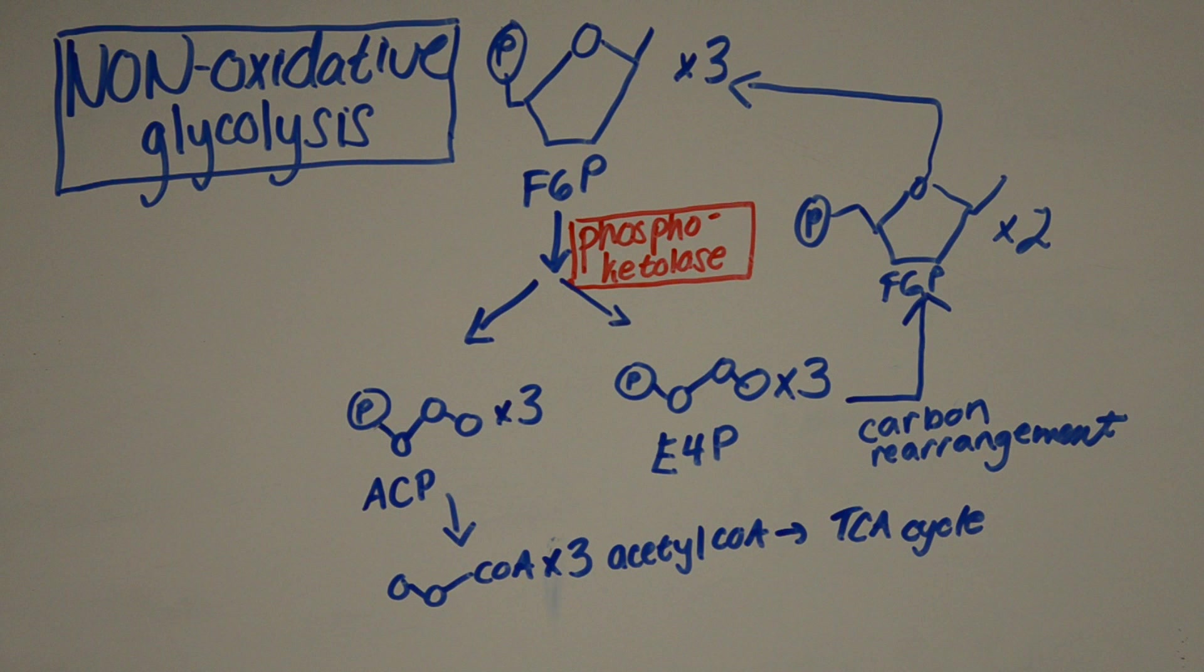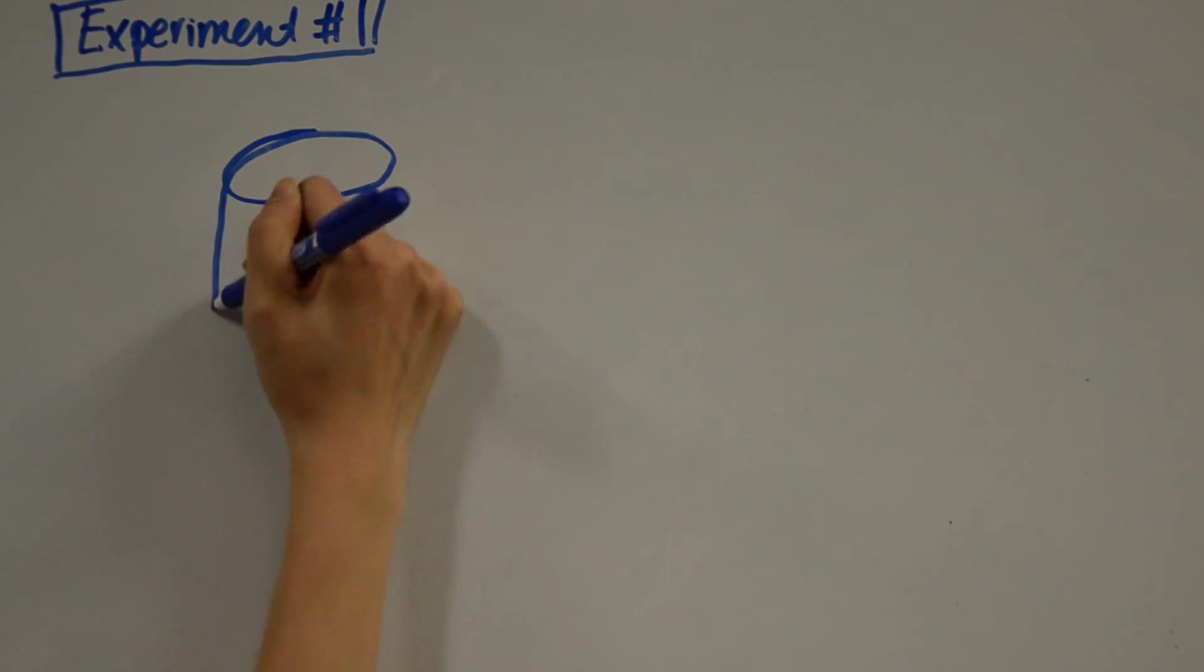This is how NOG converts a glucose molecule into three acetyl-CoA molecules without the loss of a carbon source as carbon dioxide. These clever scientists conducted many studies to make sure their pathway was working correctly.